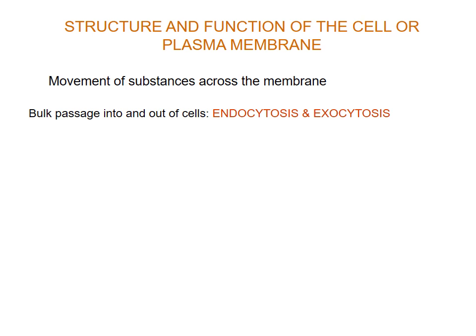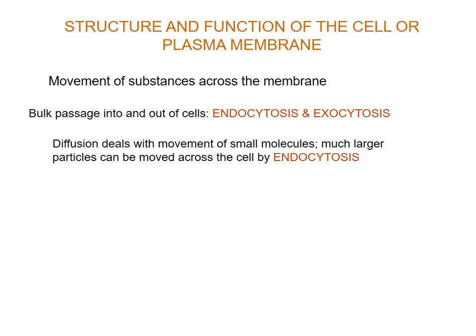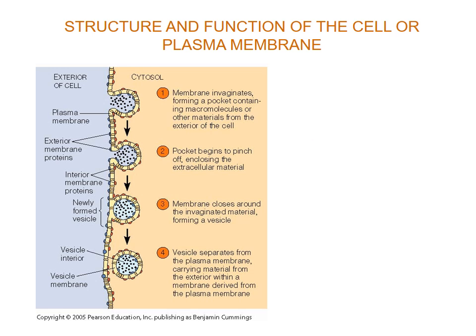Next we want to look at the movement of substances across the membrane for bulk passage — moving large molecules or large components in and out of cells. These occur through the processes of endocytosis, towards the inside, and exocytosis, towards the outside. Diffusion deals with the movement of small molecules, but much larger molecules need to be moved across the cell by what we call endocytosis. The membrane starts to invaginate or form a pocket around macromolecules, then pinches closed, forming a vesicle that is transferred to the inside of the cell.